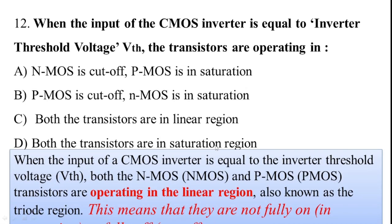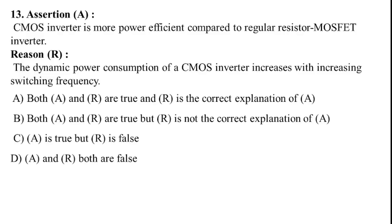When the input of a CMOS inverter equals the inverter threshold voltage VTH, both the NMOS and PMOS transistors operate in the linear region, also known as the triode region. This means they are not fully on. The correct option is C — both transistors are in the linear region.